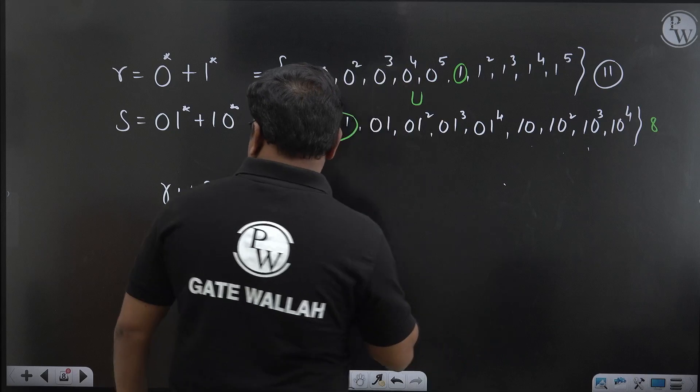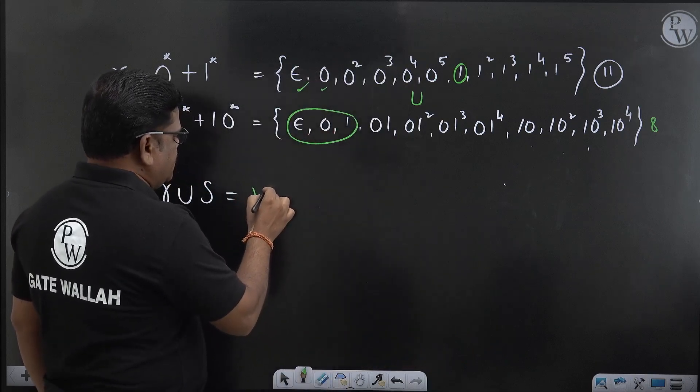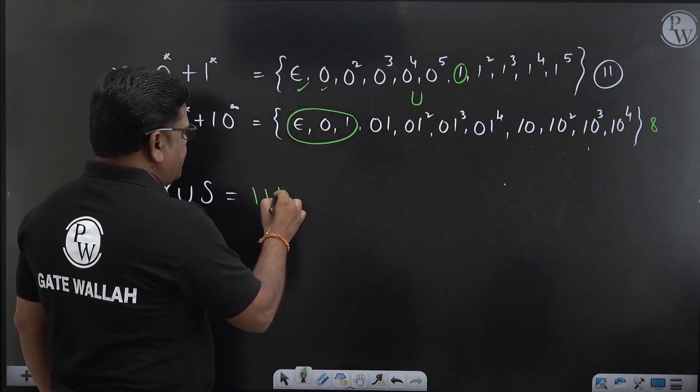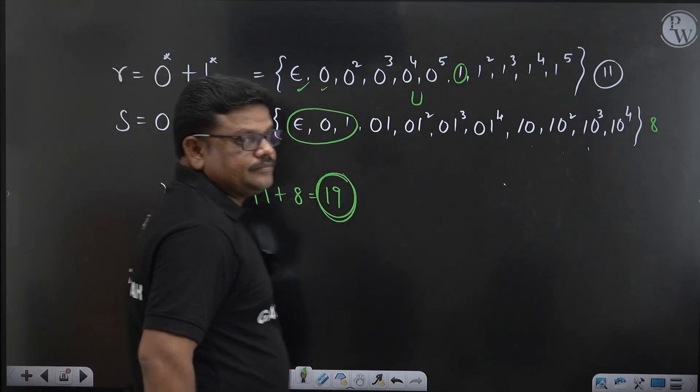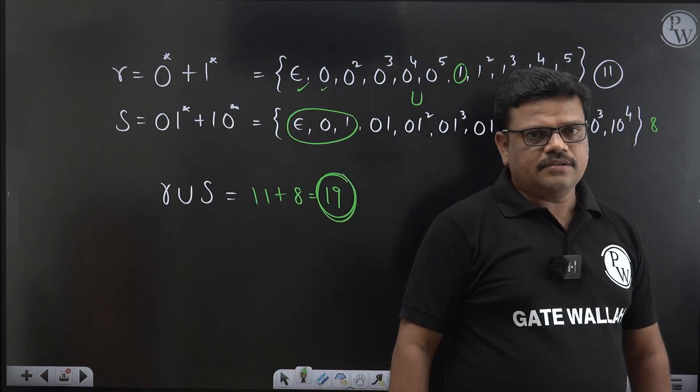Total 11, R union S contains 11 plus 8, that is 19. 19 strings are there in R union S.